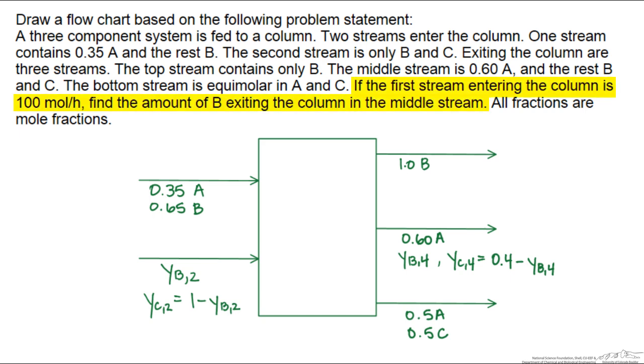Finally it says if the first stream entering the column is 100 moles per hour, which we'll call right here, find the amount of B exiting the column in the middle stream. I am going to name this N2, N3, N4, and finally this one N5.